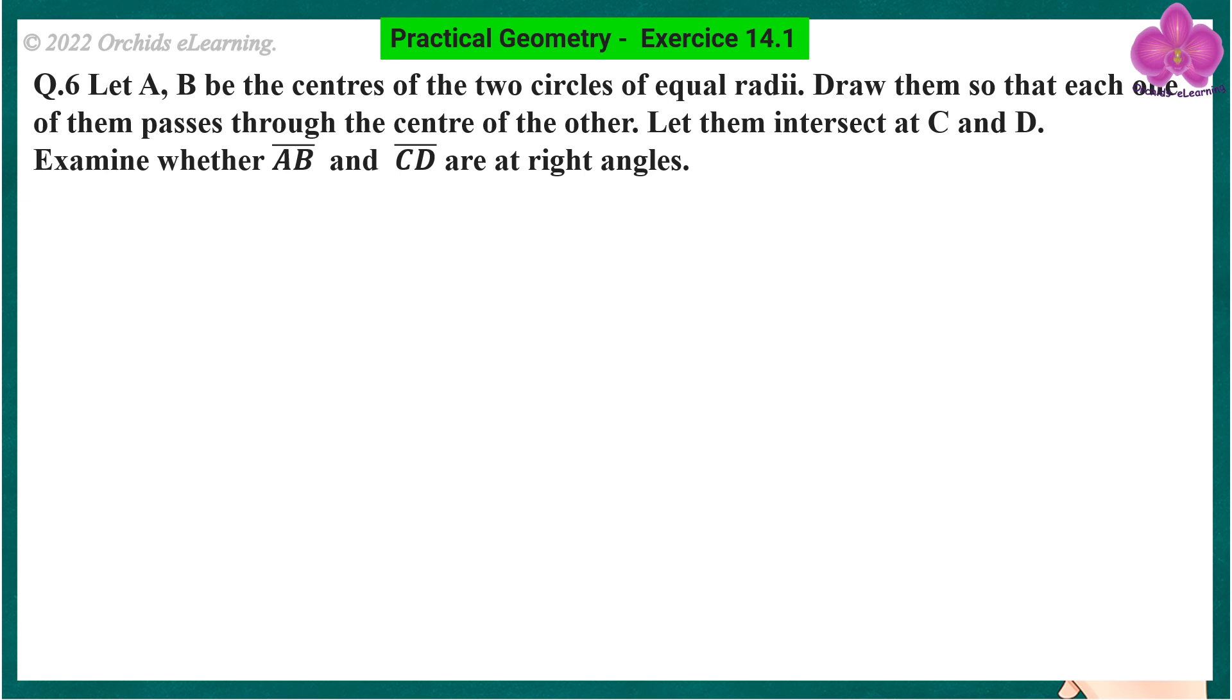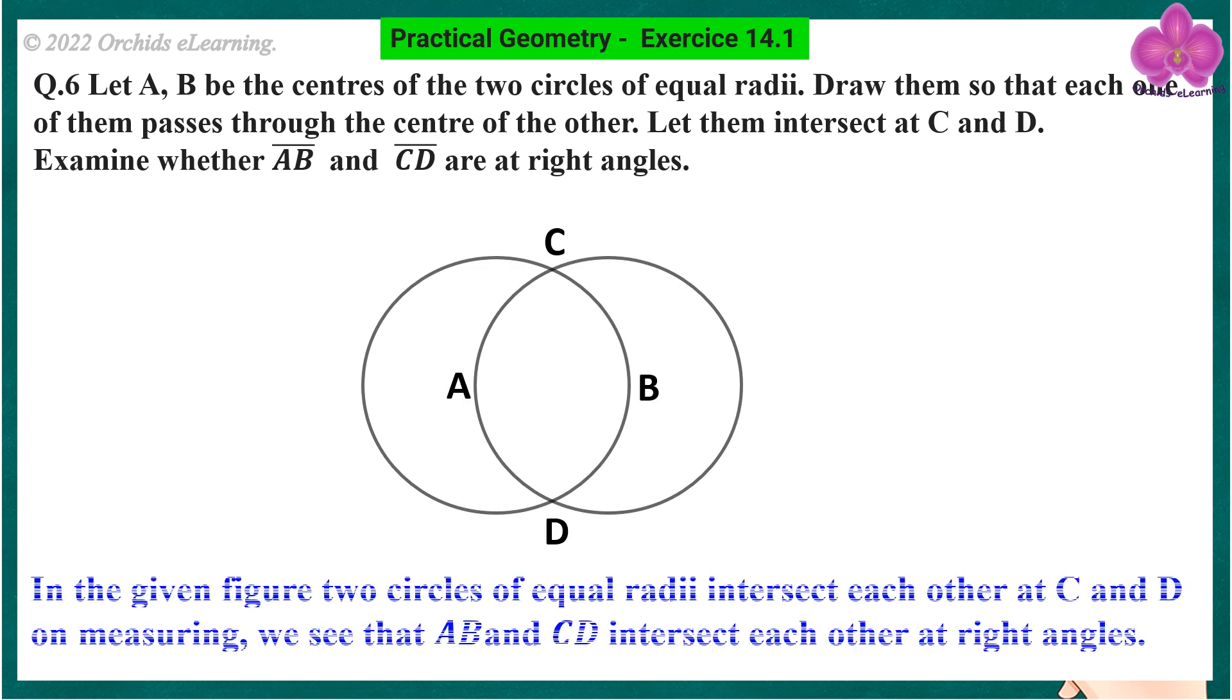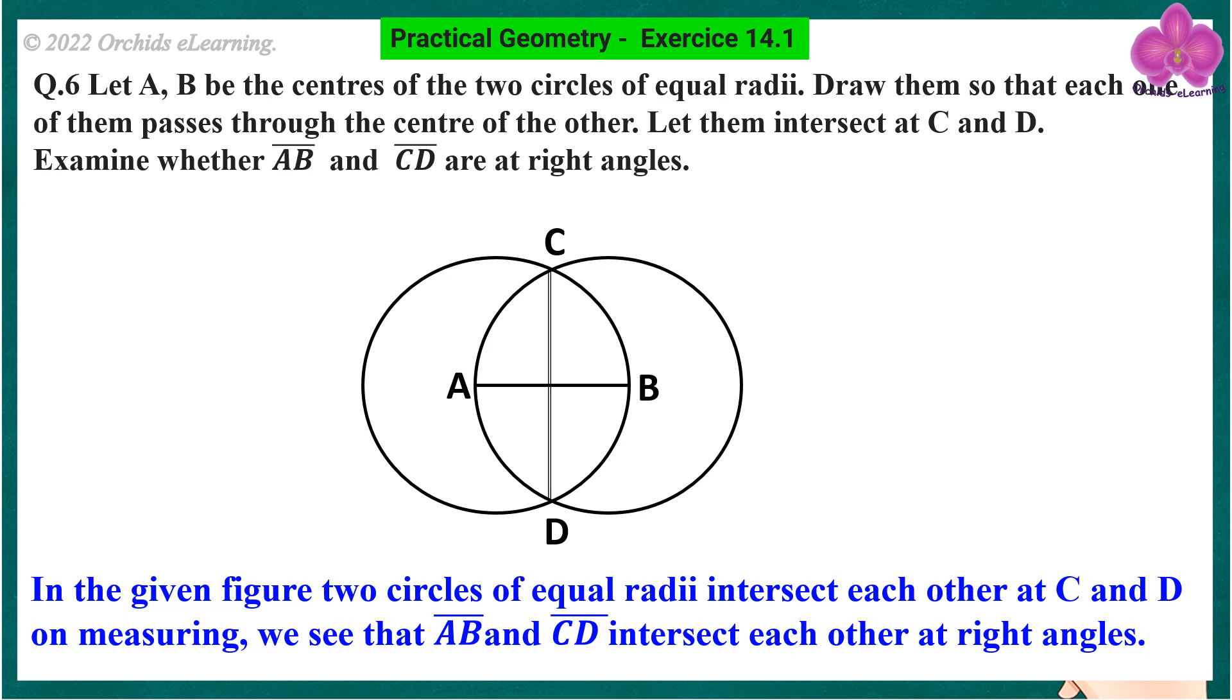Examine whether line segment AB and line segment CD are at right angles. In the given figure, two circles of equal radii intersect each other at C and D. On measuring we see that line segment AB and line segment CD intersect each other at right angles.